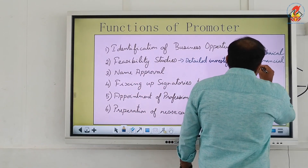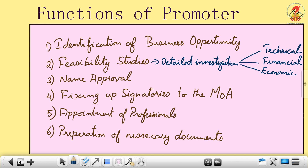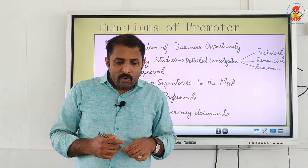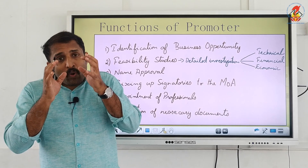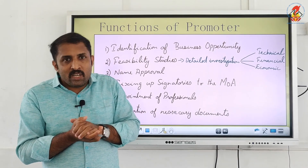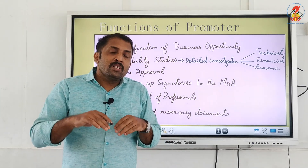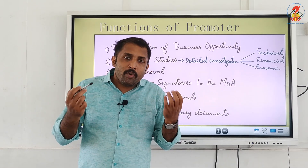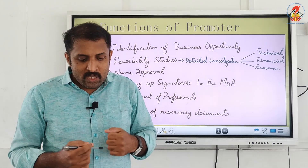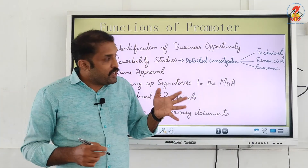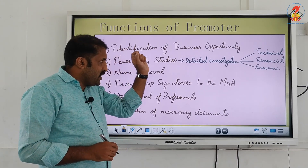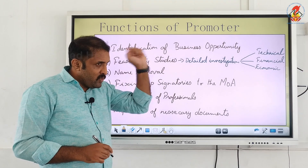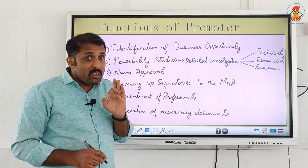The third area is economic feasibility, which is connected with financial feasibility. It checks whether the business opportunity is viable and profitable — whether it has profit-earning capacity. Checking the profitability aspect is what happens in economic feasibility. So feasibility study involves detailed investigation of technical, financial, and economic aspects.